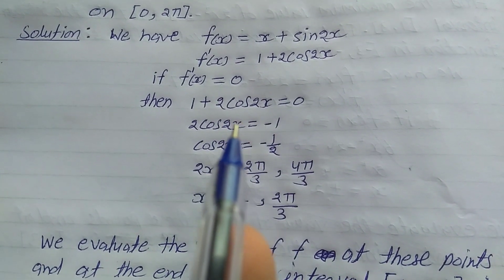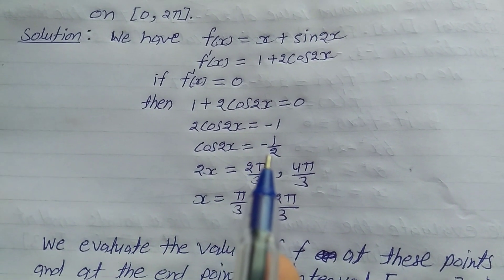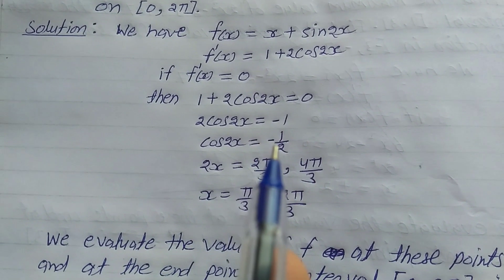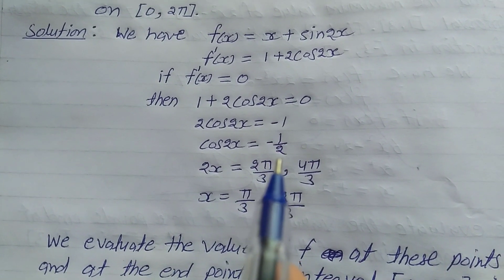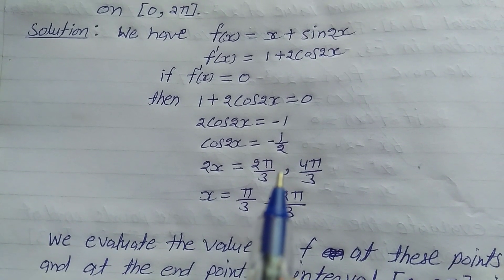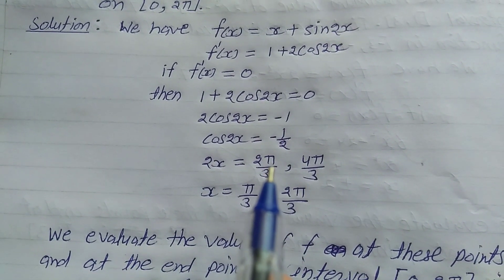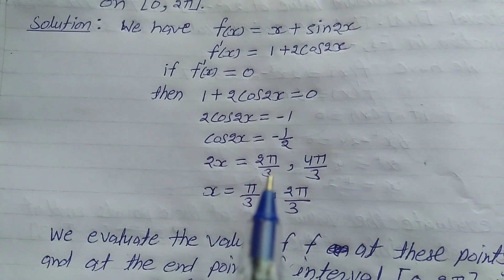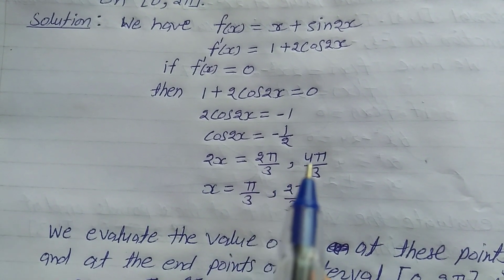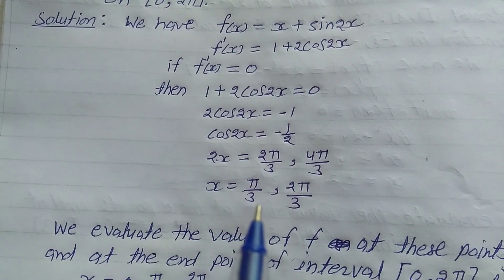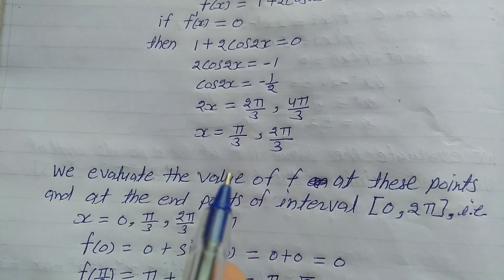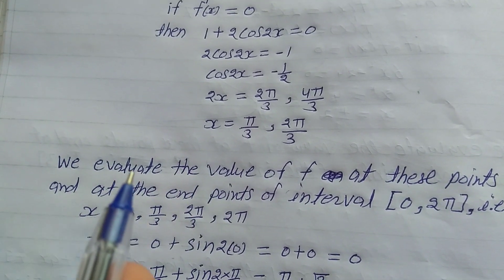So 2cos(2x) = -1, which gives cos(2x) = -1/2. The interval for 2x is [0, 4π]. The value cos(2x) = -1/2 gives 2x = 2π/3 and 2x = 4π/3, so x = π/3 and x = 2π/3.